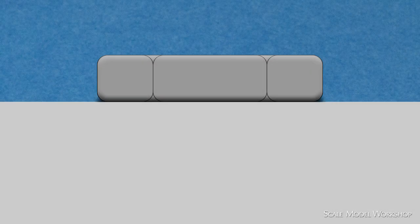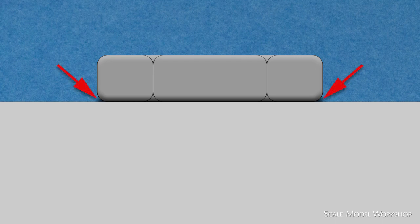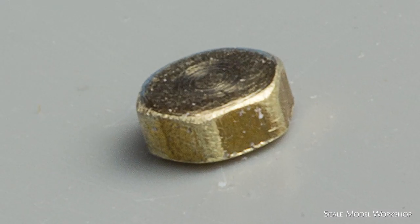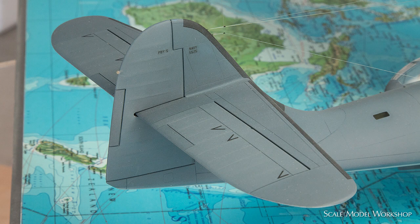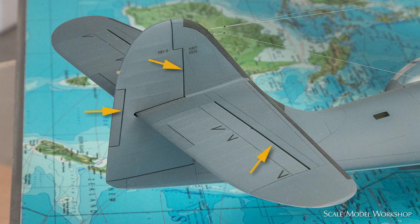In many cases, engraving can help simulate the illusion of separate details, without actually having to go through the exercise of creating the individual parts. One example would be to use engraving to define the separation of aircraft control surfaces.